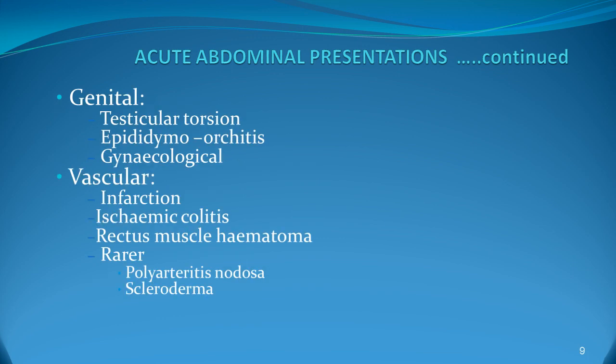Genital problems could include testicular torsion — there would be disproportion in size and elevation of the testes, and epididymo-orchitis where the testes would be red. Gynaecological problems should also be considered. Vascular causes could be infarction or ischaemic colitis. Rectus muscle haematoma can occur with injury or heavy exercise. Other medical conditions like polyarteritis nodosa and scleroderma can also present with abdominal pain.